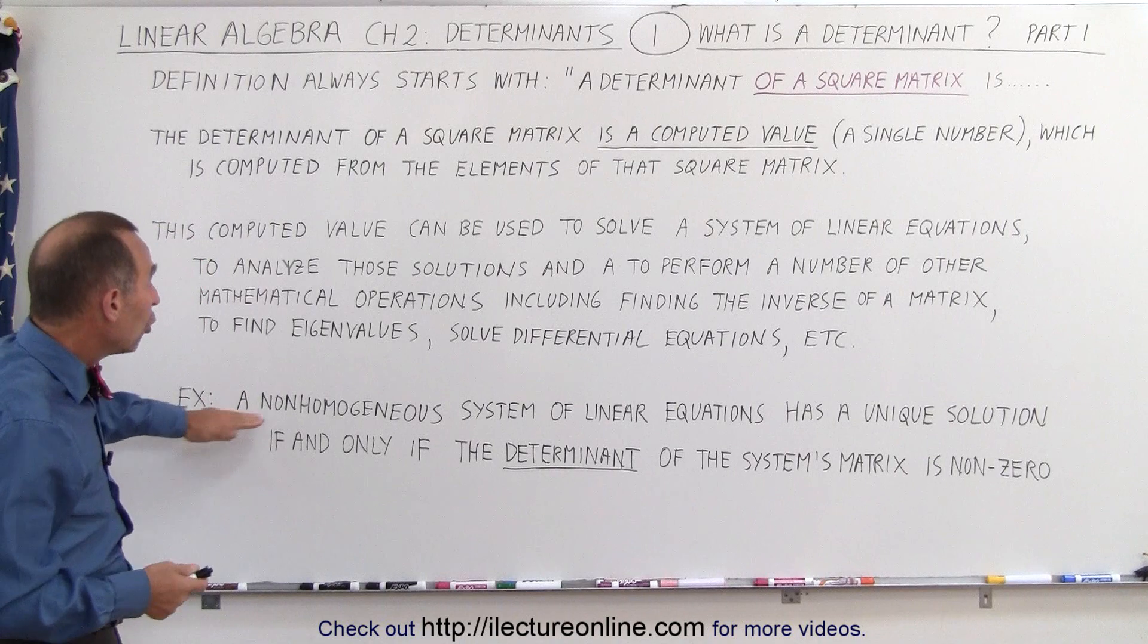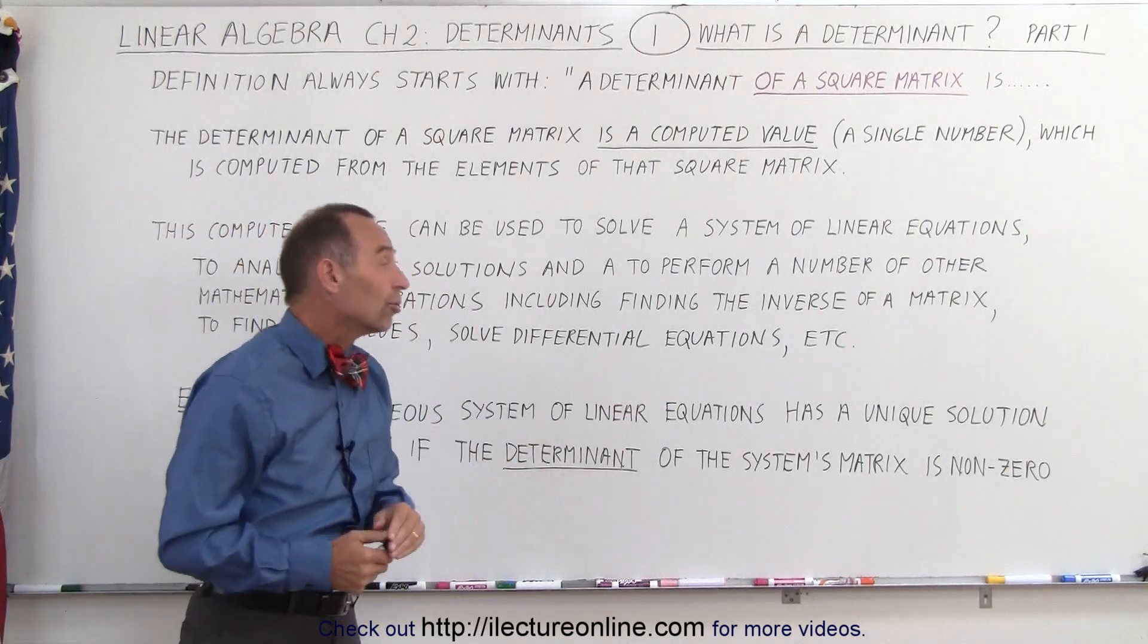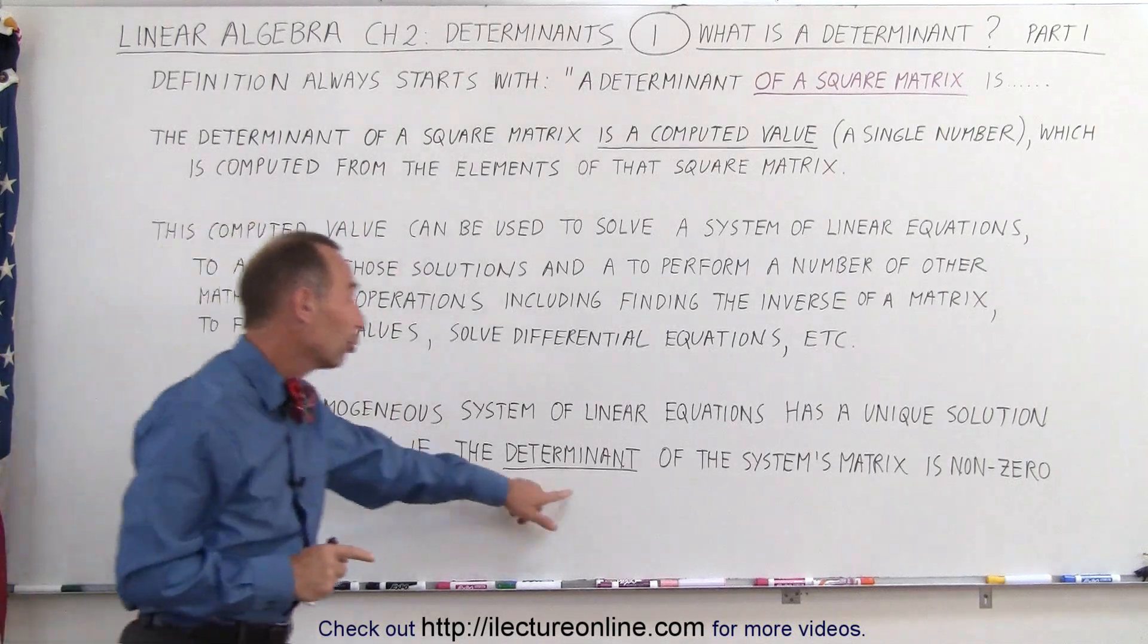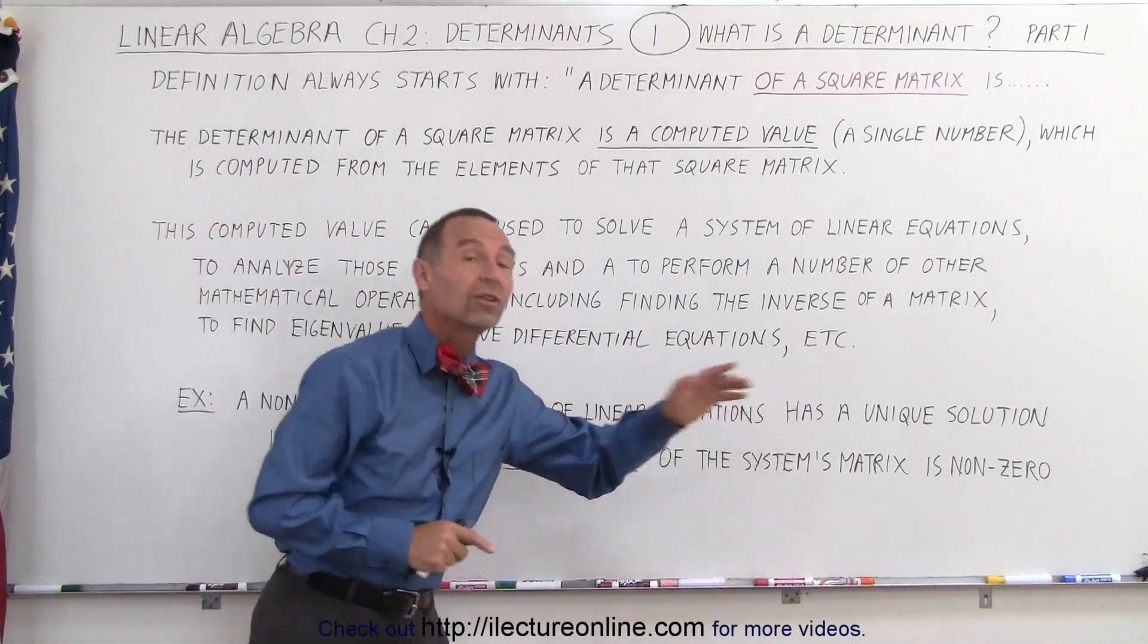As an example, a non-homogeneous system of linear equations has a unique solution if, and only if, the determinant of the system's matrix is non-zero.